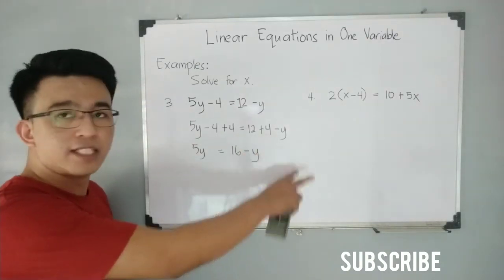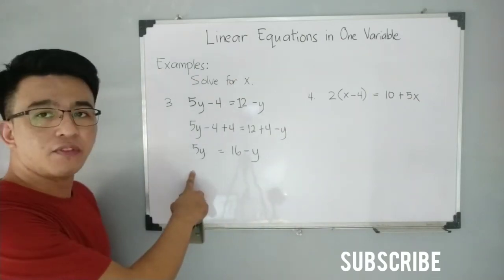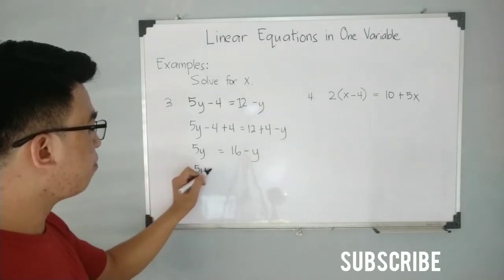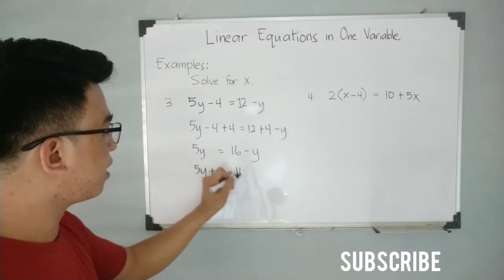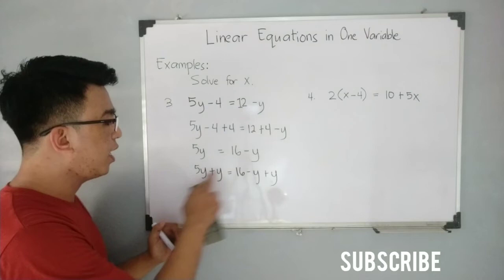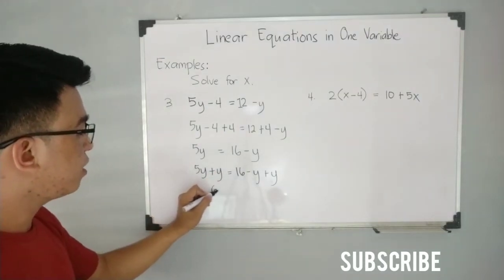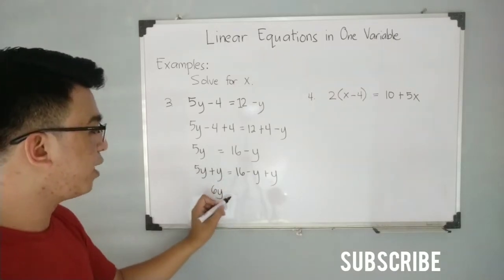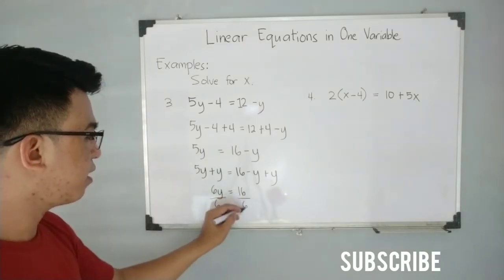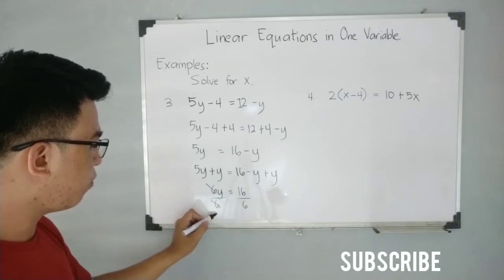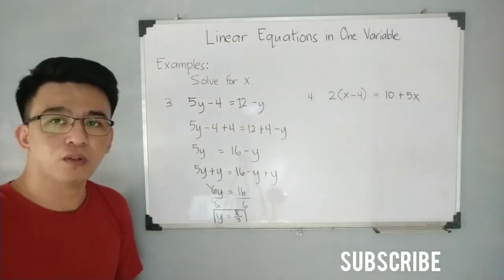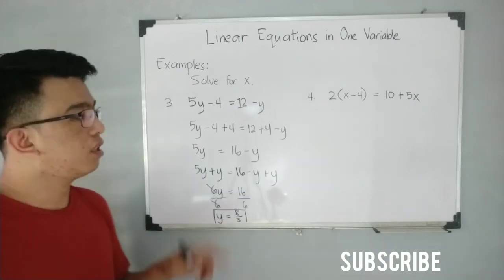Next we need to eliminate negative y from the right side and bring it to the left. By the addition property of equality, add y to both sides: 5y plus y is equal to 16 minus y plus y. Adding y to both sides removes the negative y. Simplifying: 5y plus y gives 6y, so 6y is equal to 16. Dividing both sides by 6 gives y is equal to 8 over 3.